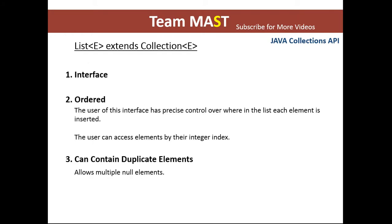Let's see all these things one by one. First of all, we have the list interface. The list interface extends the collection interface, and since it is a generic type, the capital E represents that it can be any object — it can be String, it can be a Long type object, it can be an Integer type object, or it can be any custom POJO as well. The list interface is ordered, meaning the user inserting elements into the list has control over where the elements are being inserted. You can access elements directly using an integer index. The list can also contain duplicate elements, and you can store multiple null elements in a list.